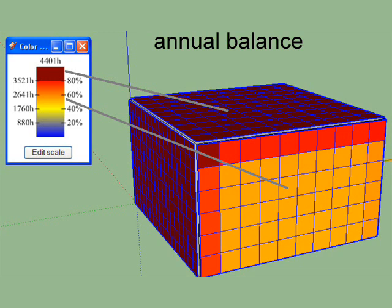So in one year, the simulation gives the result of 4401 hours of solar exposure on the building. We see here with the gradient of colors that 80% of that goes to the roof and 50% goes to the face that we see here.